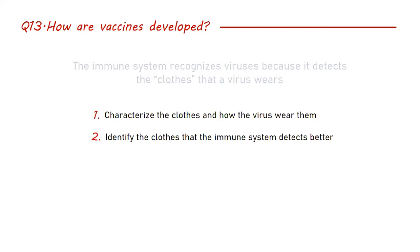For example, Ebola virus might be wearing orange trousers with a white t-shirt. A white t-shirt might not be easy to see against the white background of the body, but orange trousers will stand out. So it's better to train the immune system to detect orange trousers — the most distinctive feature — rather than something that might look very similar to everything else. Identifying the most promising candidates is a very important step.